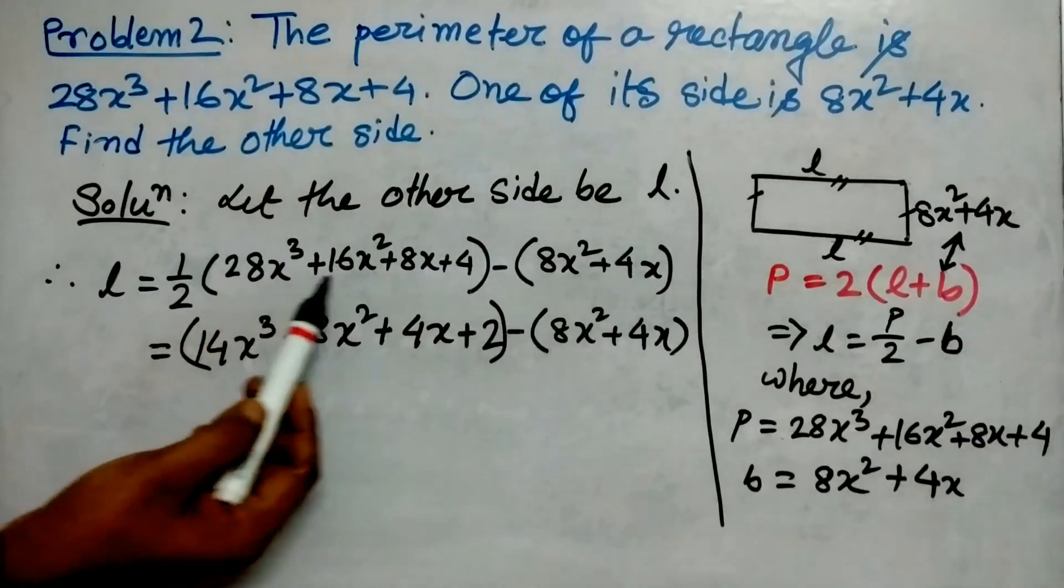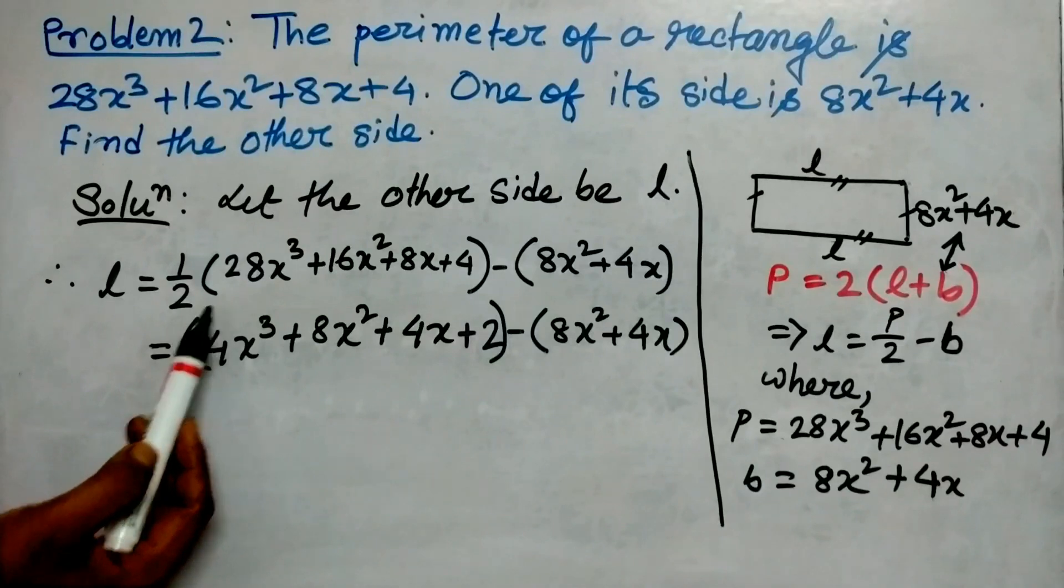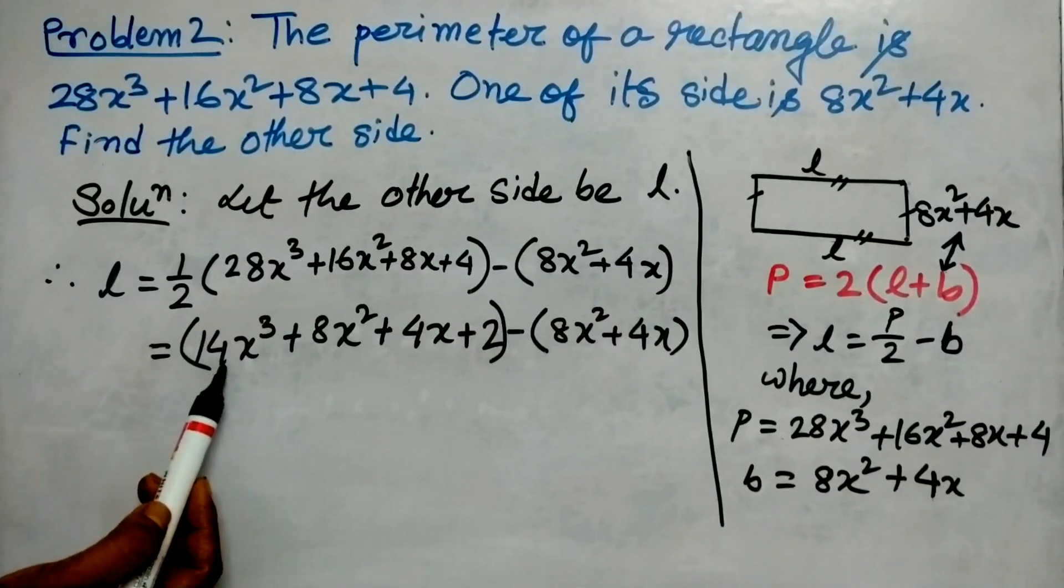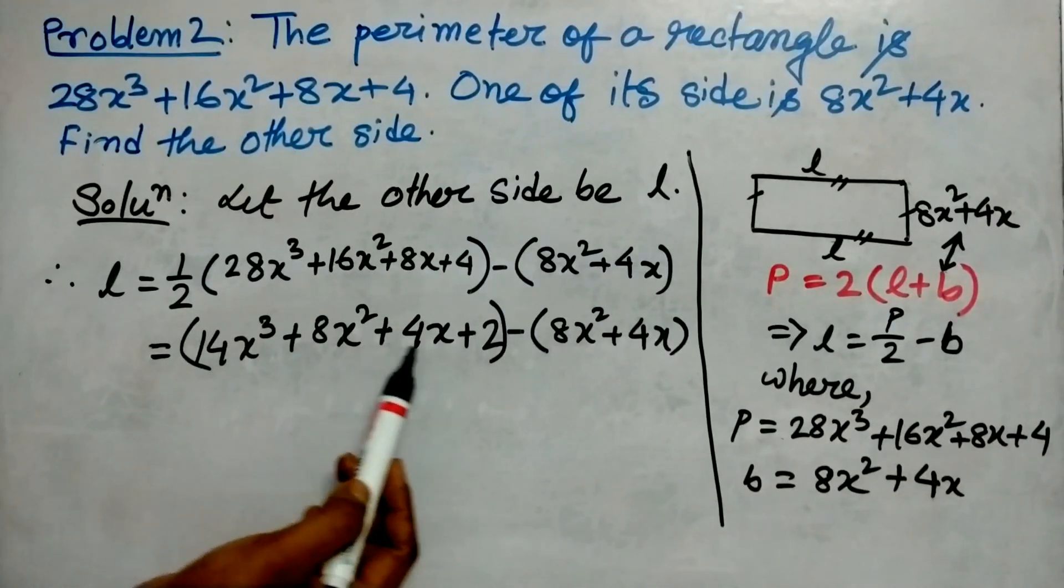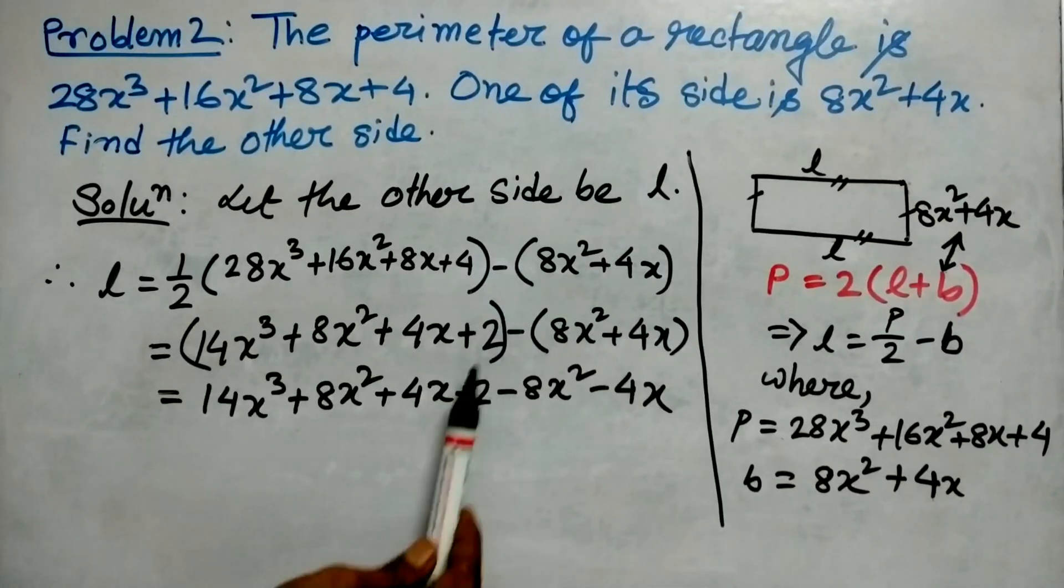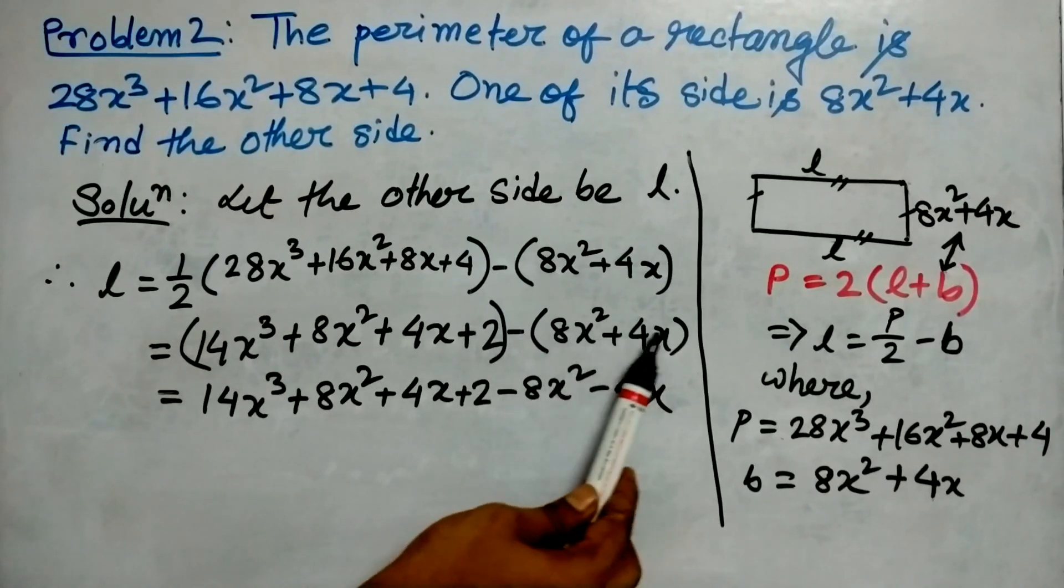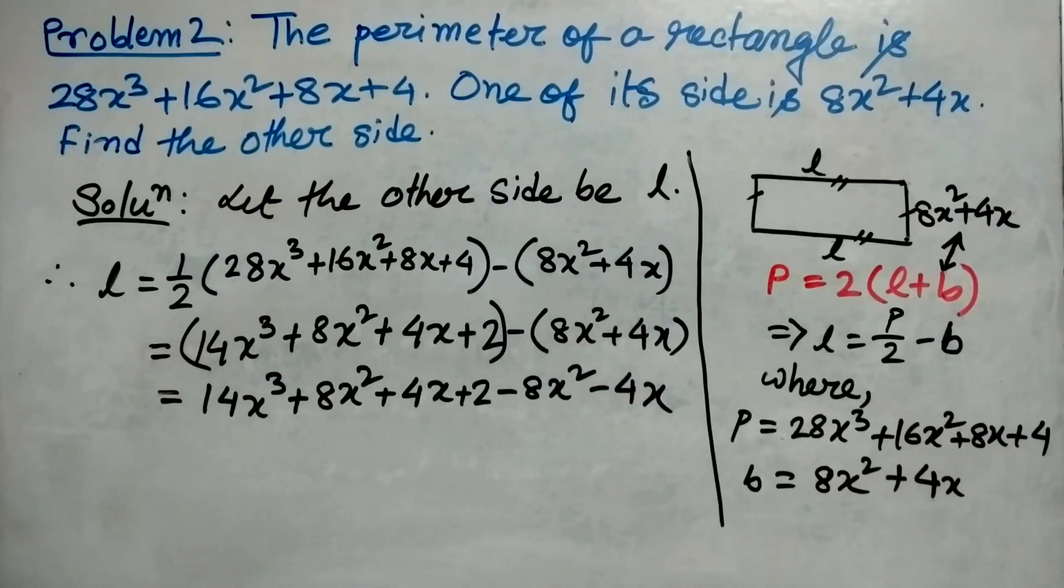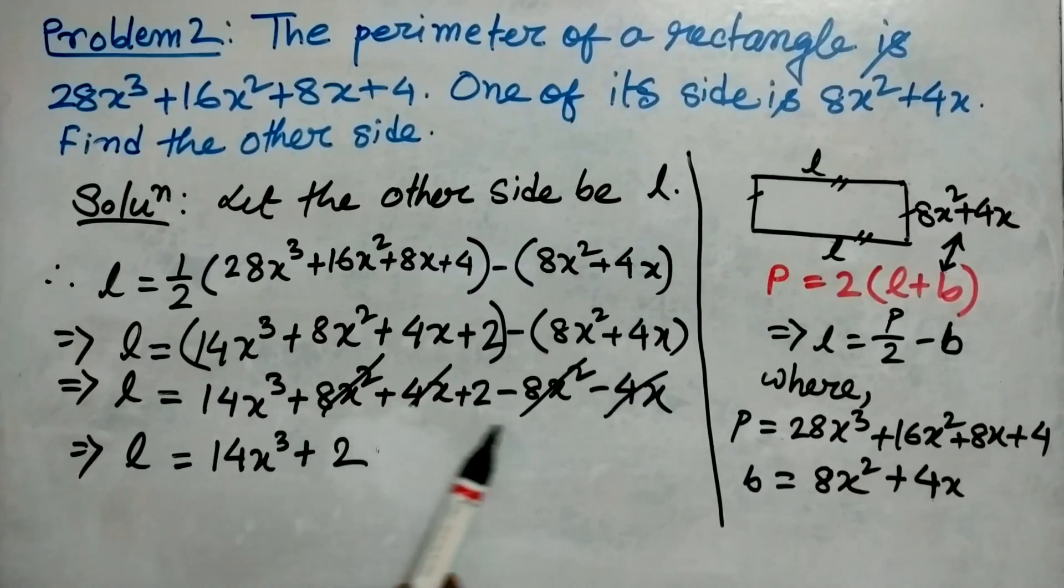1/2 will be multiplied with each term in the bracket, so it becomes 14x³+8x²+4x+2. We have opened the bracket and changed the sign of each term. This 8x² and -8x² cancel, and similarly 4x and -4x cancel. So what is left: 14x³ and 2. Therefore l = 14x³+2 and this is the answer.